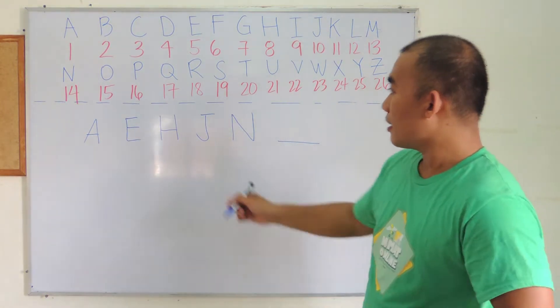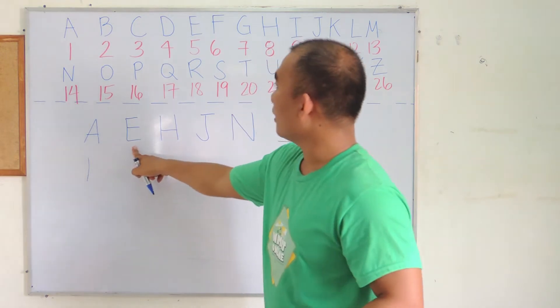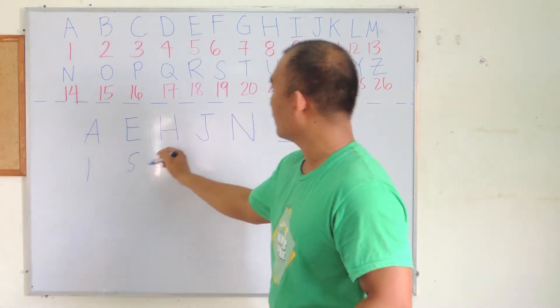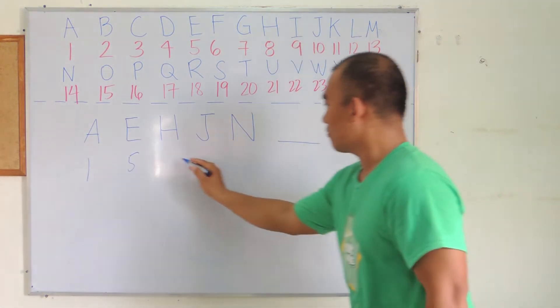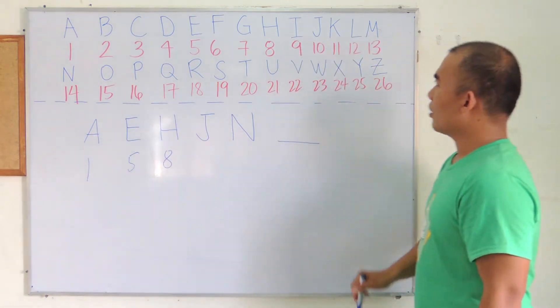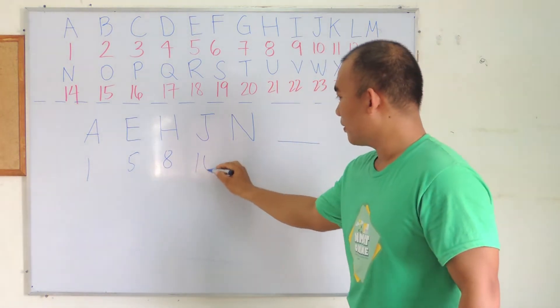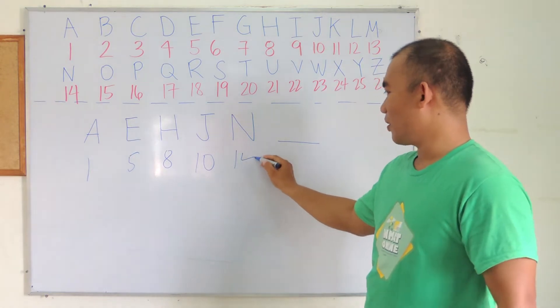So A is 1, E is 5, H is 8, J is 10, N is 14.